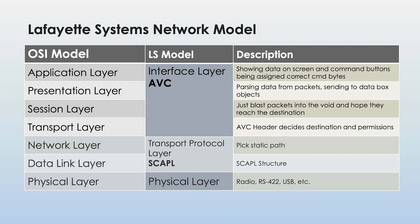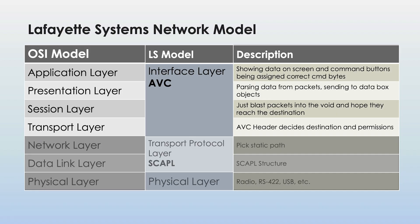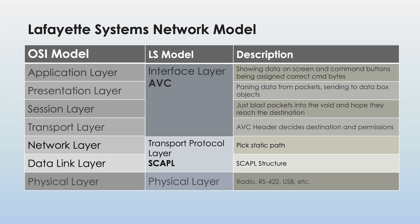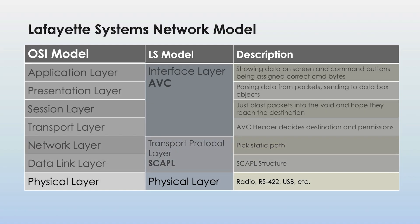First is the interface layer. This translates a user input on my ground control software into a command, and then when the rocket receives that command it does something with it. This is implemented on the ground control software and on the flight software. Next is what I'm going to call the transport protocol layer. This takes all the information we're sending back and forth and puts them into concise little packets. It also performs error checking so when we receive a packet we know we've received it in its entirety with no errors. This uses a protocol I made up called Scalpel. And lastly is the physical layer — this is how we get those packets from one place to another, either a wired connection using something like USB or RS422, or a wireless connection using an XB radio.